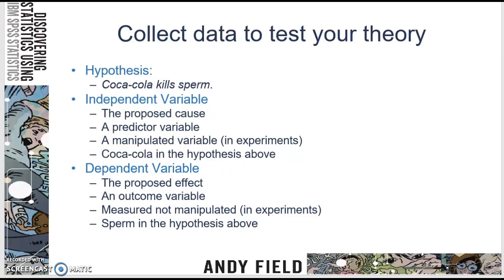The dependent variable is the proposed effect, also known as an outcome variable. This is what is measured, not what is manipulated. And in this case, sperm is the dependent variable in the hypothesis above.